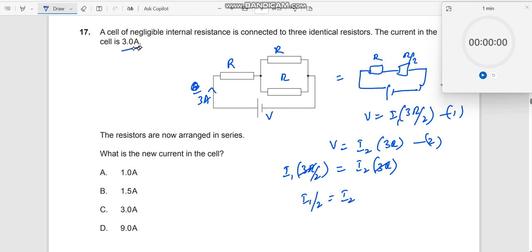What is I1? I1 is already given 3 amperes. Substitute this, 3 by 2 is equal to 1.5 amperes, which is nothing but equal to I2. That is what is been asked. So the answer is 1.5.